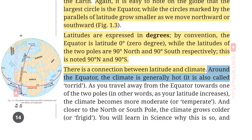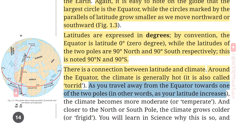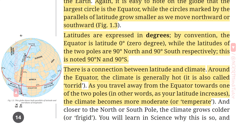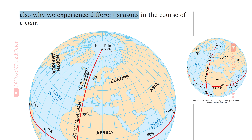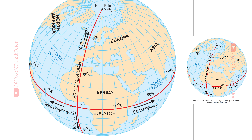There is a connection between latitude and climate. Around the equator, the climate is generally hot — it is also called torrid (उष्ण). As you travel away from the equator towards one of the two poles — as your latitude increases — the climate becomes more moderate or temperate (समशीतोष्ण). Closer to the north and south poles, the climate grows colder and frigid. You will learn in science why this is so, and also why we experience different seasons in the course of a year.